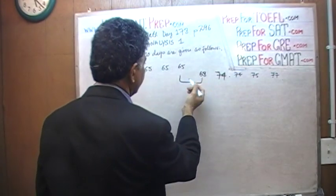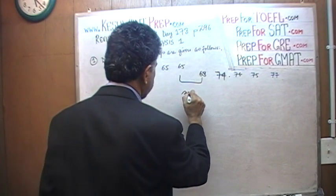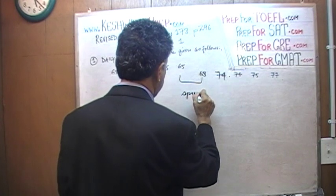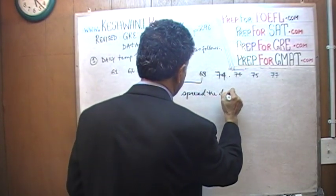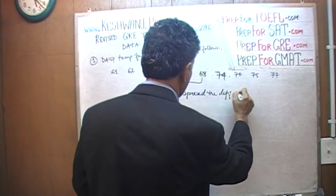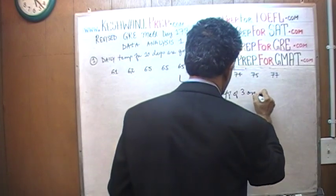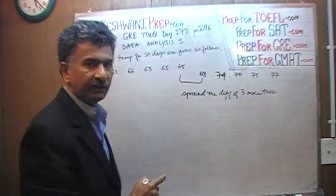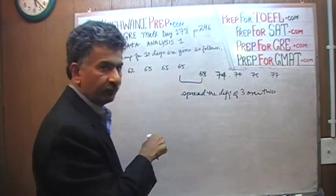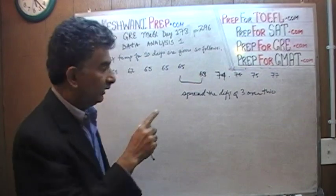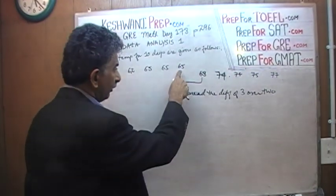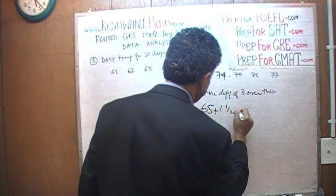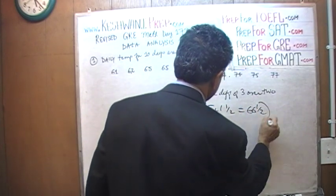The 5th and 6th observations are 65 and 68 — we have a spread of 3. The difference is 3; I divide that over 2, which means the median is 65 plus 1.5, or 66.5. That's our median.